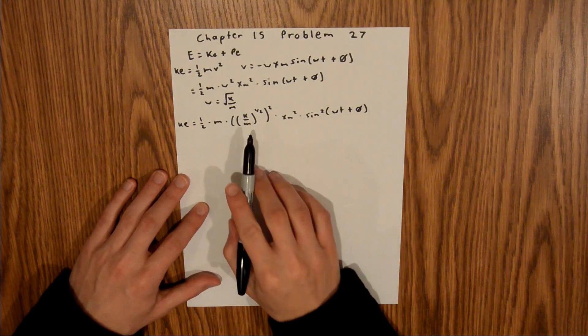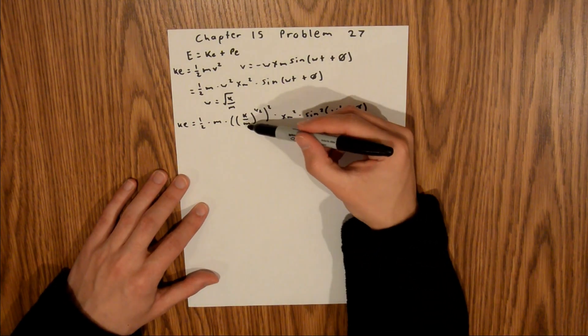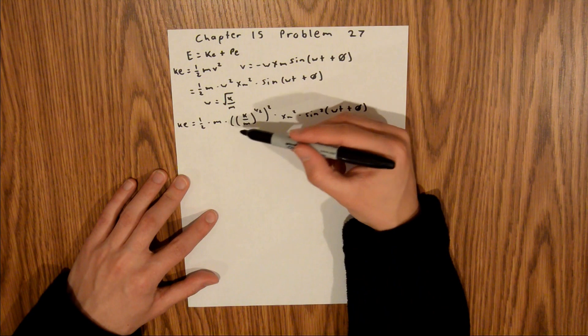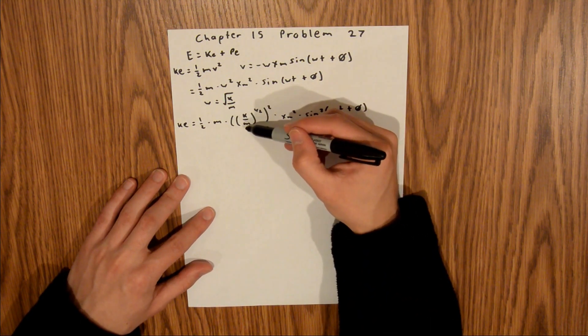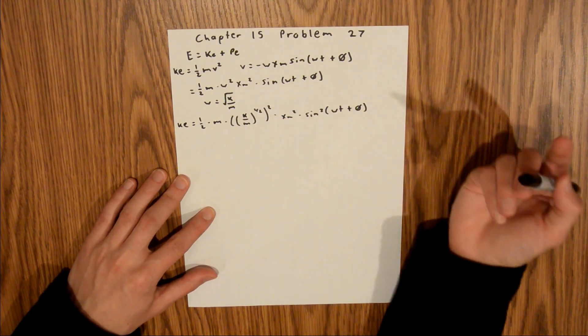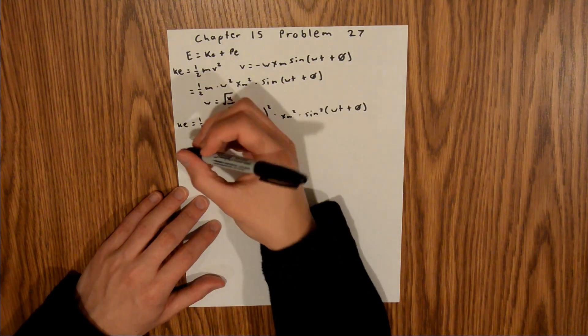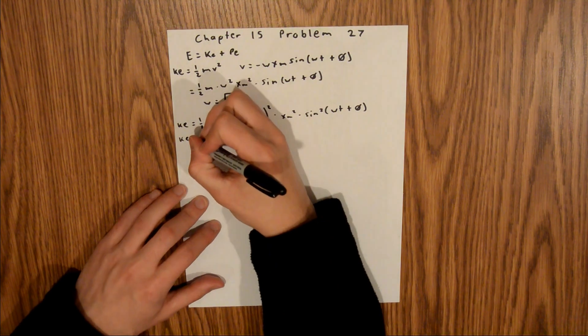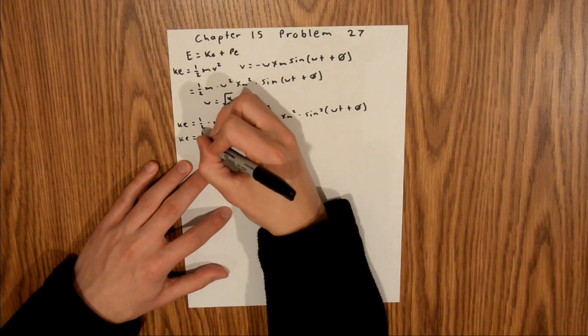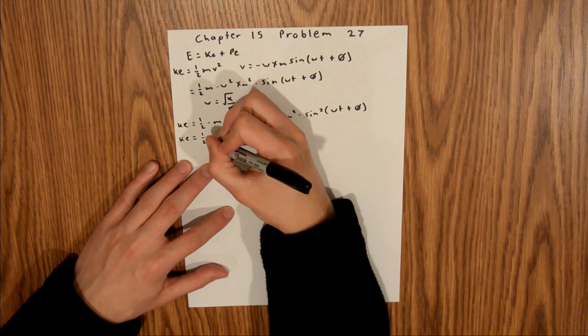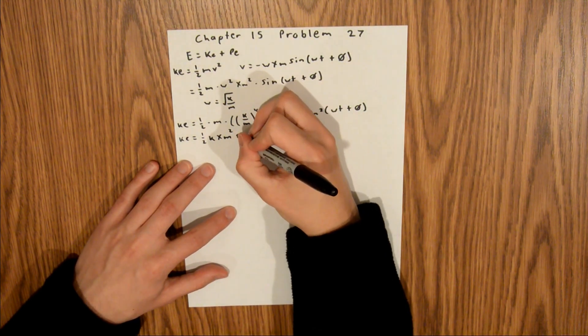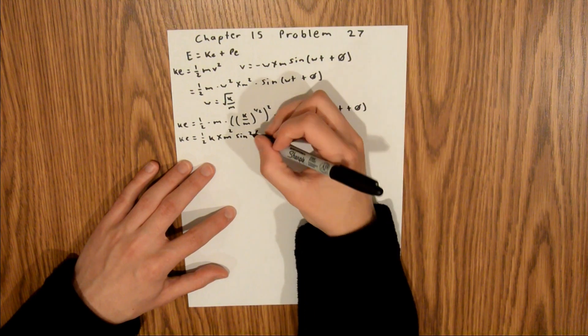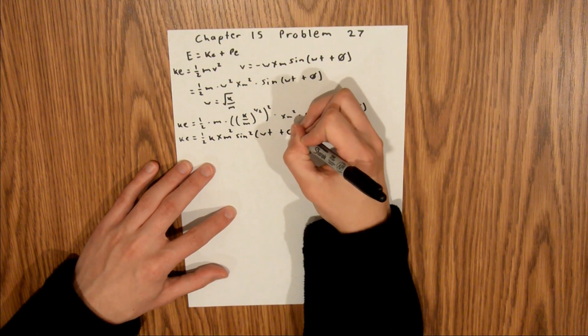And so the reason why I wrote this like this is because we have k over m to the 1 half, which is the same thing as the square root of k over m, and then squared. So then this just becomes k over m, and your two m's will cancel out. And so then your kinetic energy is equal to 1 half kxm squared sine squared of omega t plus phi.